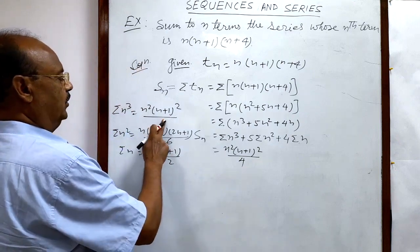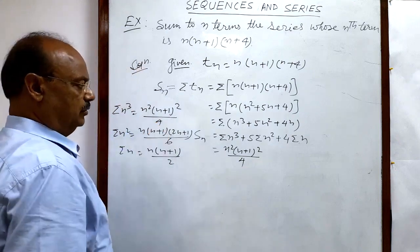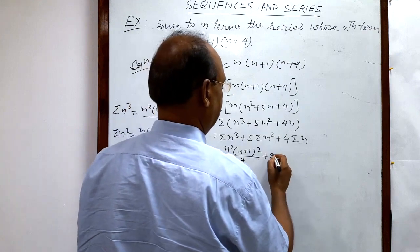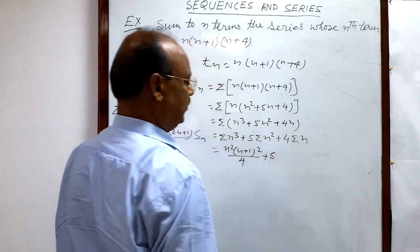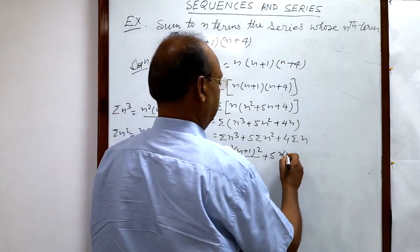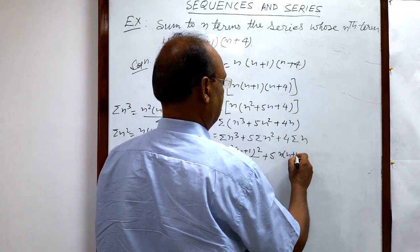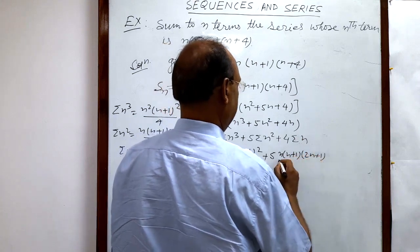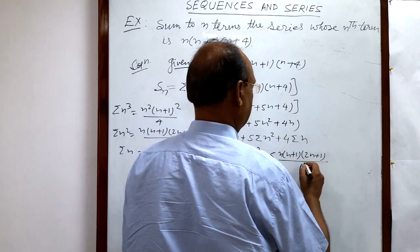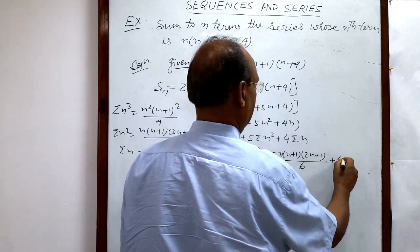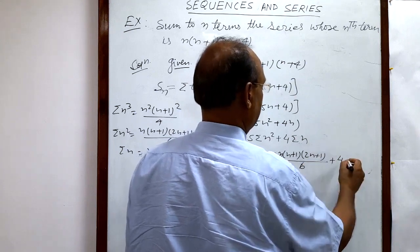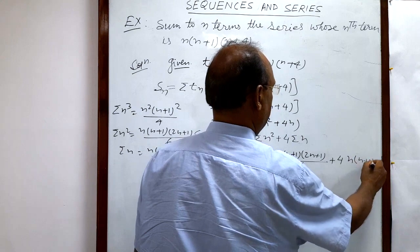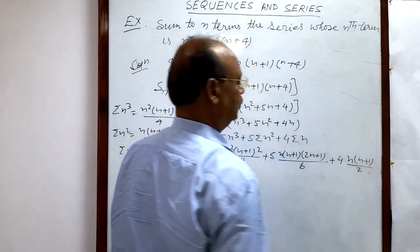So, sigma n cubed is n squared(n+1) squared divided by 4, plus 5 times sigma n squared which is n(n+1)(2n+1) divided by 6, plus 4 times sigma n which is n(n+1) divided by 2.